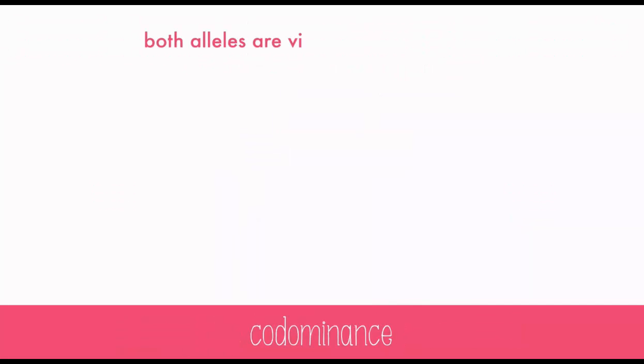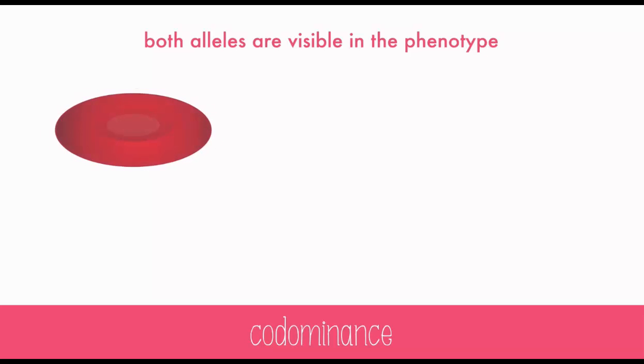Codominance is when both alleles are visible in the phenotype. A great example of this is blood type. Type O blood has no protein markers called antigens on it, and it's essentially the recessive blood type.